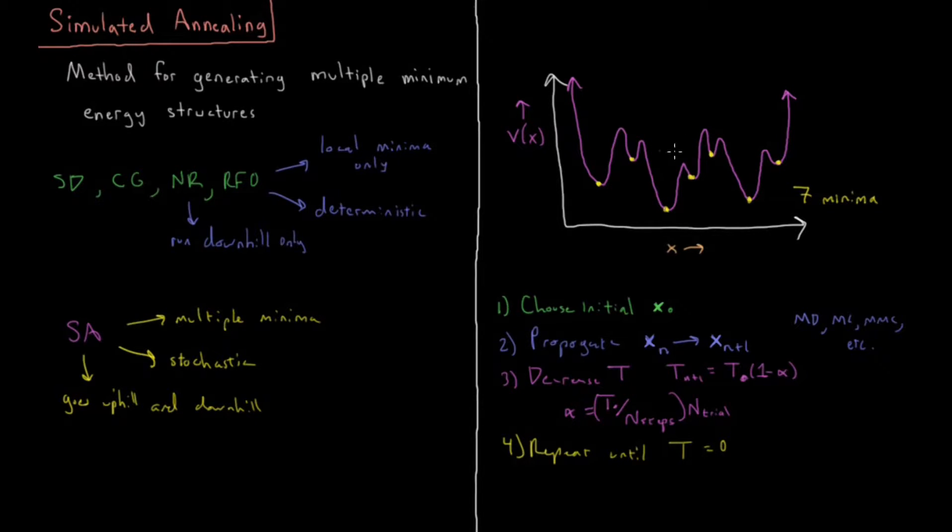Maybe we get trapped in this region here. As the energy keeps going down, we keep getting trapped until we rattle around and eventually settle at a particular local minimum. So we'll always settle at a local minimum by the time T equals zero.